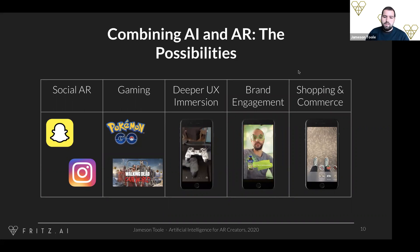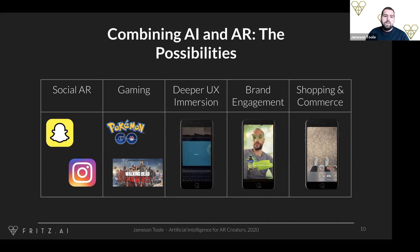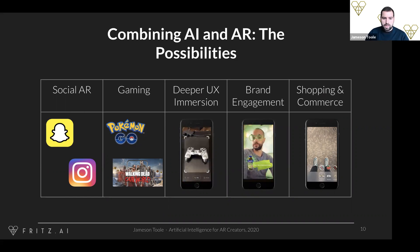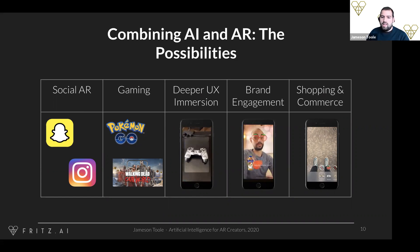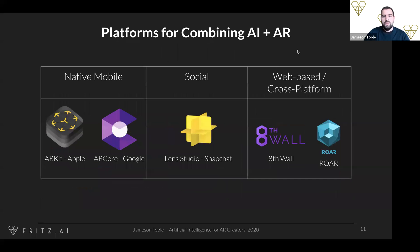Here are some of the areas I'm most excited about when combining AI and AR: social AR like Snapchat, gaming — Pokémon Go was incredibly popular — deep immersive UX experiences where you can copy objects from the real world and place them into presentations or other content, brand engagement, and shopping and commerce such as virtual try-on and the furniture use case I just showed.